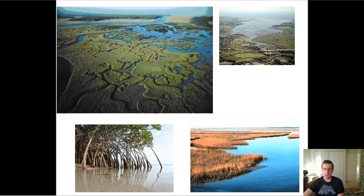Another set of biomes that's very interesting is going to be in between the salt water and the fresh water. This happens when, in the environment, the sea sometimes during the high tide invades the land where a river is hitting it. That area in between where the river and the fresh water and the salt water of the ocean mix is called an estuary.